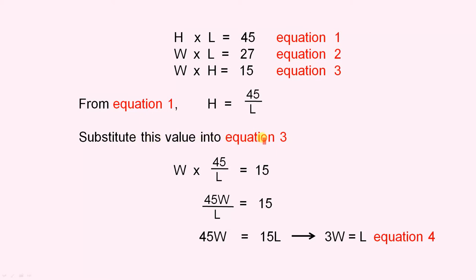Substitute this value into equation 3. So the 45 over L, we substitute it into equation 3, into this one here. So when we see H, which is there, we just put 45 over L. And that's what I've done here. So 45W over L equals 15. Multiply both sides by L to give us 45W equals 15L. And we simplify to get 3W equals L. And that's equation 4.